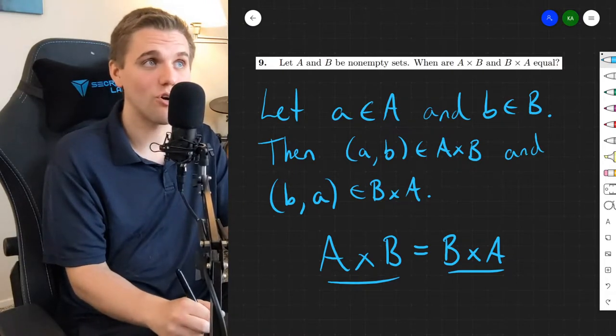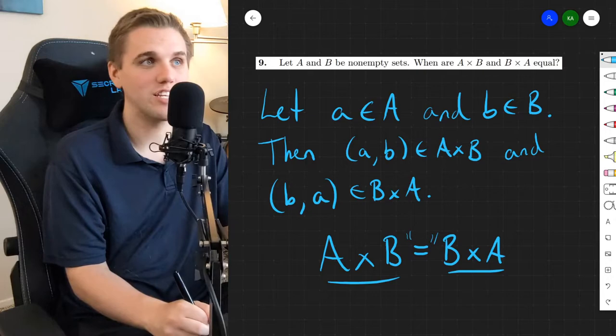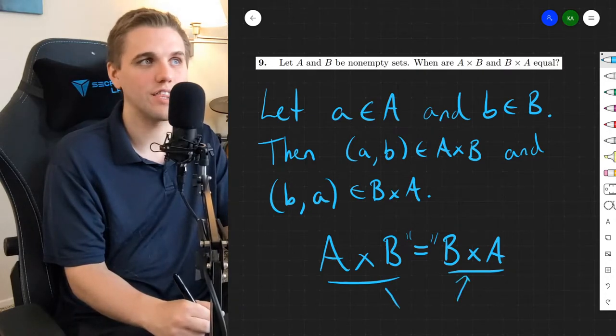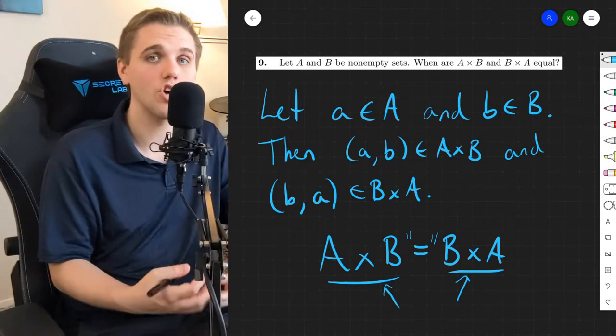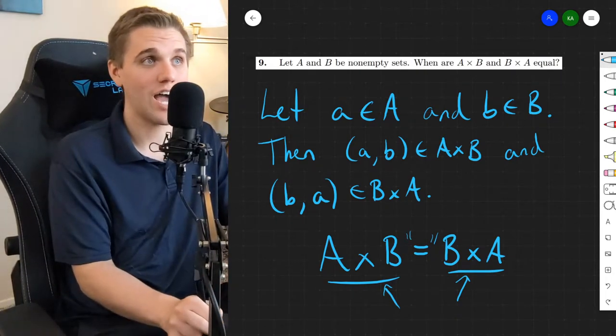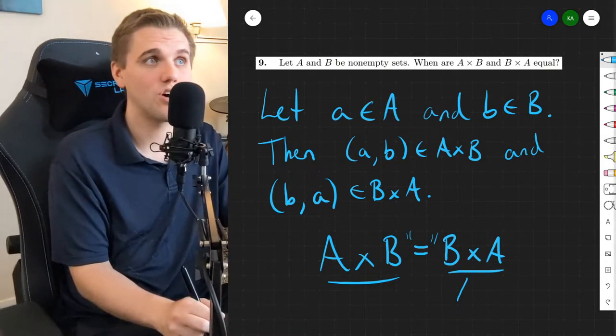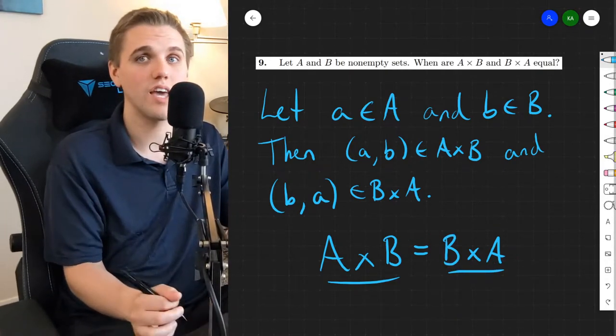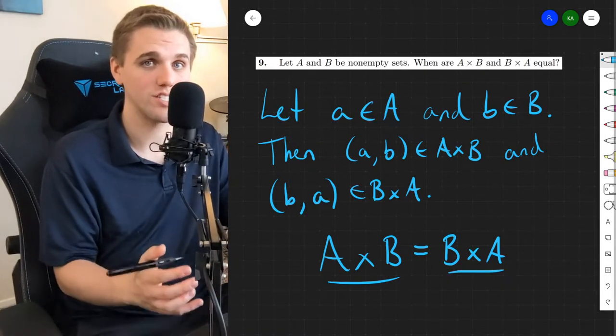Well first, in order to understand what this equals here means, we have to identify what these things are. When you take two sets and you find the cross product, the result, the entire result is a set in and of itself. And so this equals is a set equals, meaning that these two sets are the same.